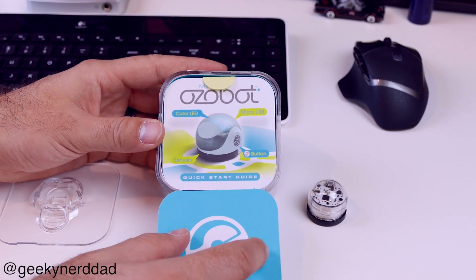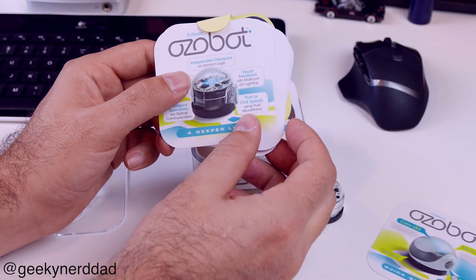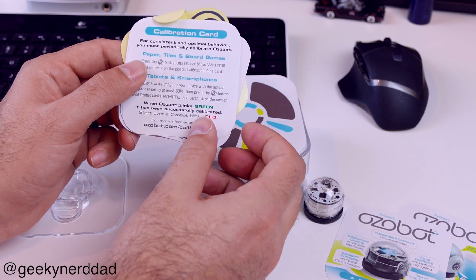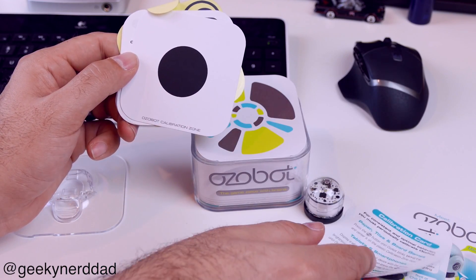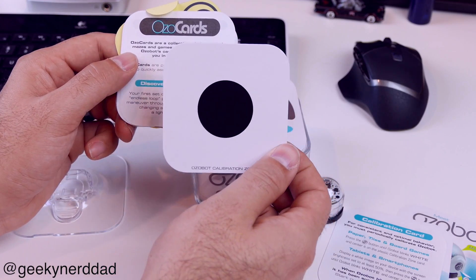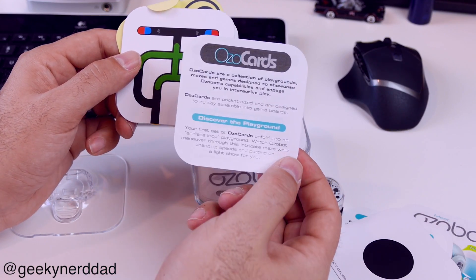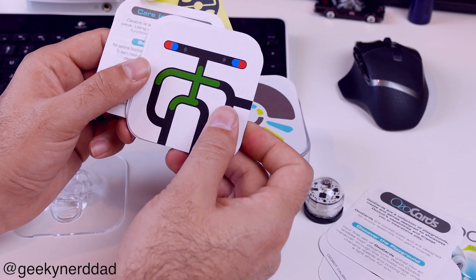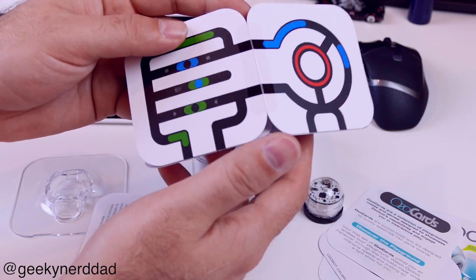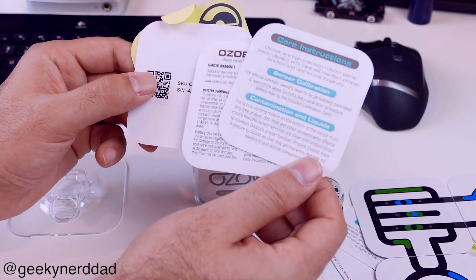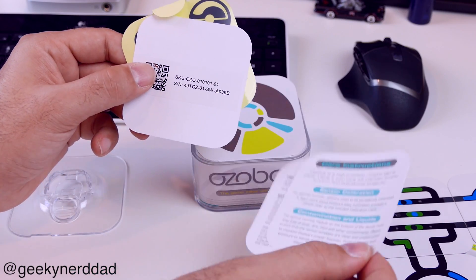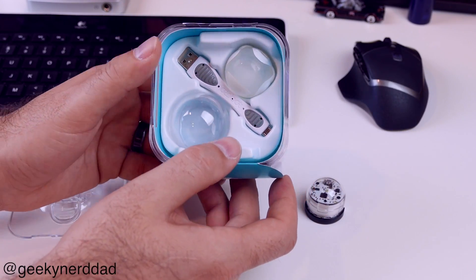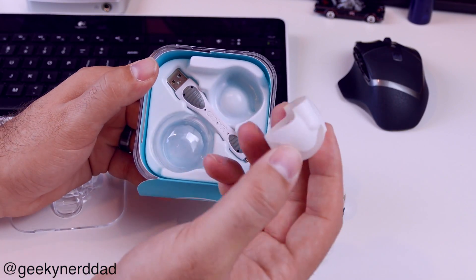What we have underneath is a quick start guide, a deeper look at it telling you what the different features are, and a calibration card with the black dot. It's showing you Ozo cards, you can get some more different cards, and then it comes with this one right here where you fold it open and it does all kinds of different things. Then you just have some care instructions, some info, warranty, and then Ozobot stickers.